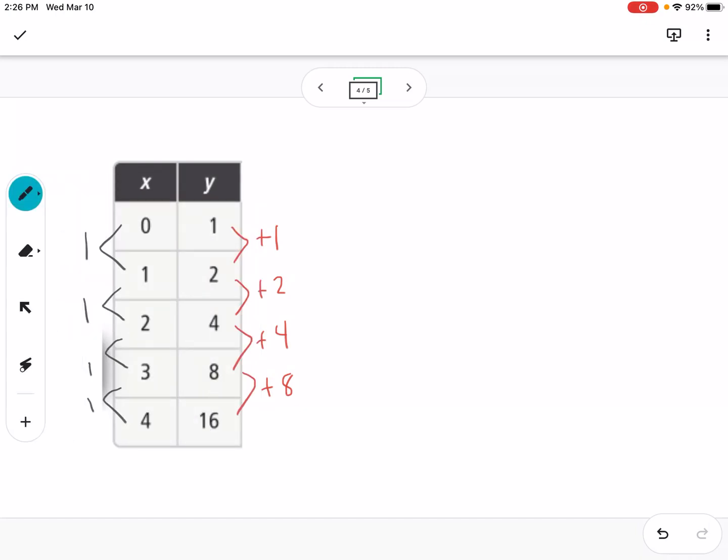It doesn't have a constant first difference. Then this is up 1, this is up 2, this is up 4. So also the second differences are not constant. So this is not linear, it's not quadratic.